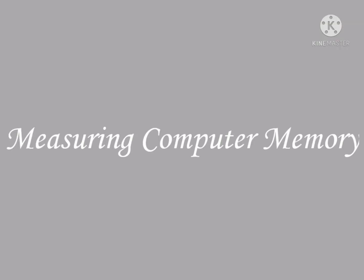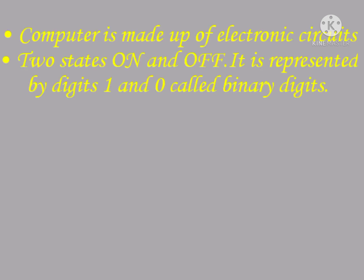Now let's see how we measure computer memory. In your phone, we are using one GB per day, right. Do you know how many bits are in one gigabyte? Today we will learn that. First of all, you know that a computer is made up of electronic circuits. It is an electronic device, and every electronic device has only two states: on or off. A fan is an electronic device — it has only two states, on and off. Like a fan, a computer is also an electronic device.